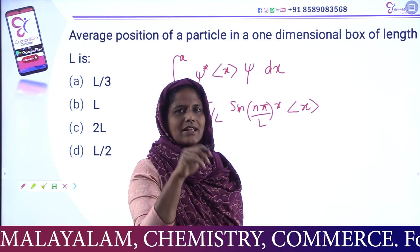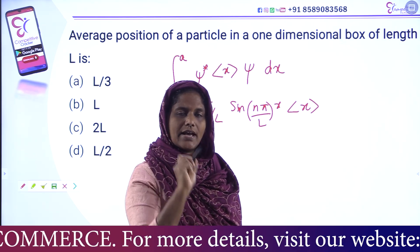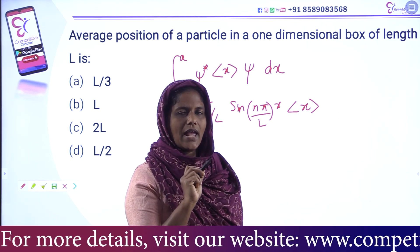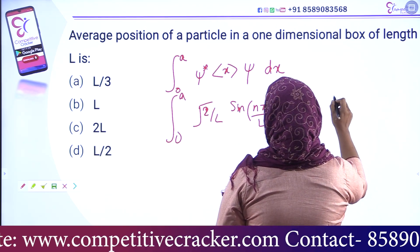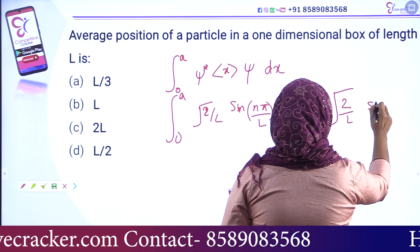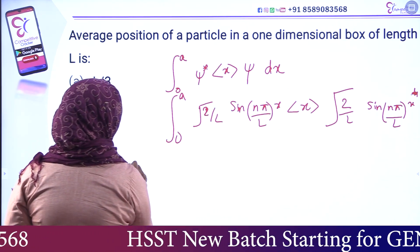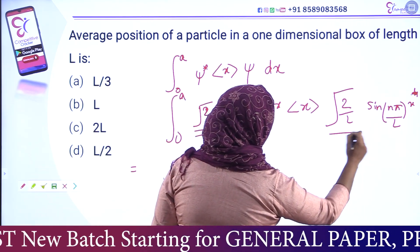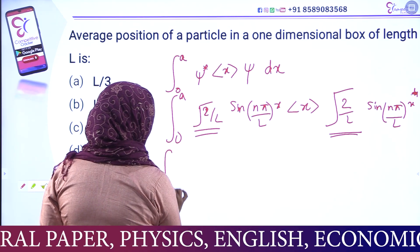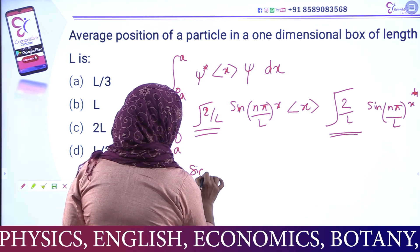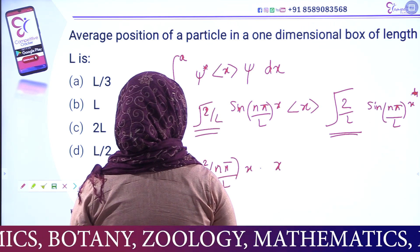Evaluating the integral: the expectation value of position equals the integral from 0 to a of ψ* times x times ψ dx. Since ψ is root 2/L times sin(nπx/L), we get ψ² equal to 2/L times sin²(nπx/L). The constant 2/L comes out of the integral from 0 to L of x times sin²(nπx/L) dx.